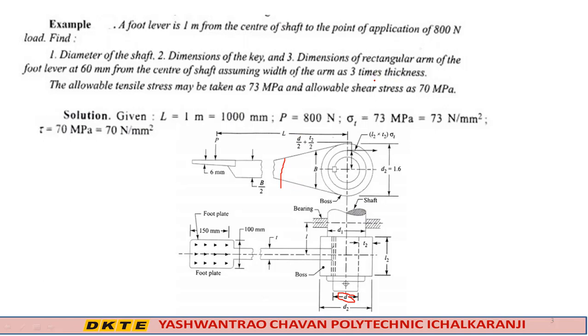The allowable tensile stress may be taken as 73 MPa and allowable shear stress as 70 MPa. The length L is 1 meter equals 1000 mm. Effort P is 800 Newton. Tensile stress is 73 MPa equals 73 N/mm². Shear stress is 70 MPa equals 70 N/mm².